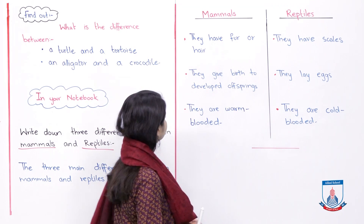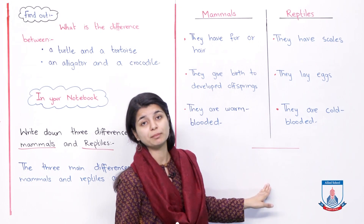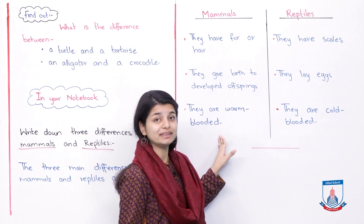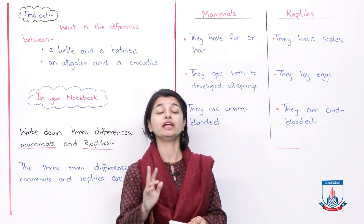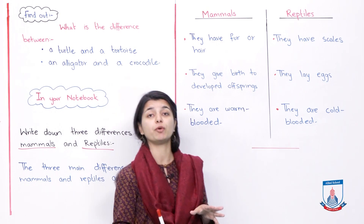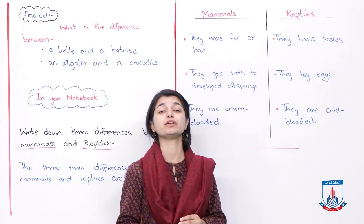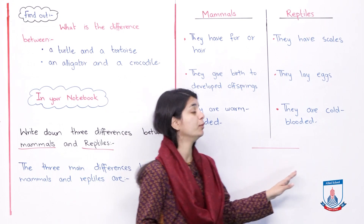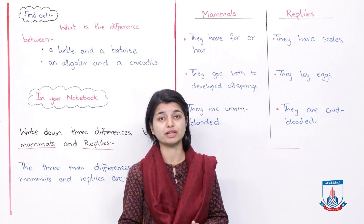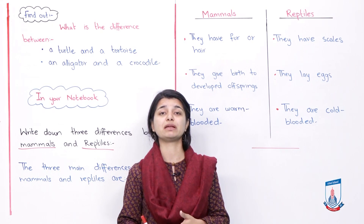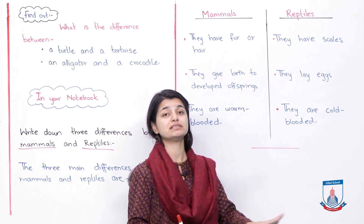The third difference is that mammals are warm-blooded and reptiles are cold-blooded. Mammals can regulate and maintain their body temperature — they can stay active all the time. Reptiles cannot, as their body temperature changes with the environment. Those are the three main differences between these two categories of vertebrates.